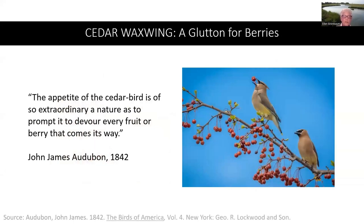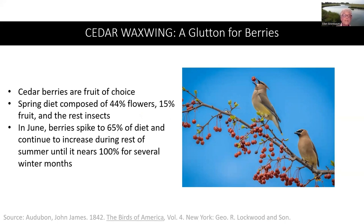Let's take a closer look at the cedar waxwing — it's been called a glutton for berries. John James Audubon wrote in 1842, 'The appetite of the cedar bird is of so extraordinary a nature as to prompt it to devour every fruit or berry that comes its way.' Cedar berries are the fruit of choice of the cedar waxwing. The spring diet is composed of 44% flowers, 50% fruit, and the rest insects. In June, berries spike to 65% of the diet and continue to increase during the rest of the summer until it nears 100% for several winter months.